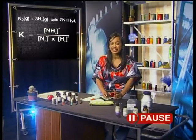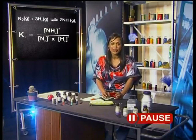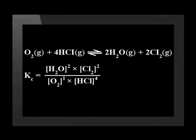Can you write the expression for Kc for the following reaction? Oxygen reacts with hydrogen chloride to produce water and chlorine. Did you get this? Products in the numerator, reactants in the denominator, and ratio numbers now used as exponents. It will come with practice. This reaction is a homogeneous reaction because all the substances are gases.